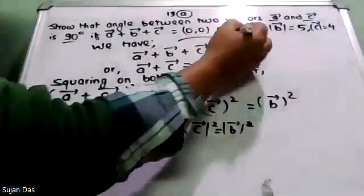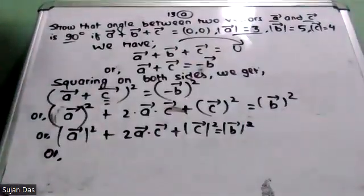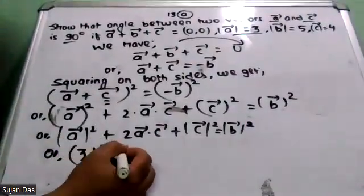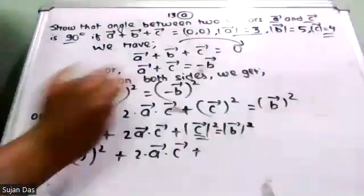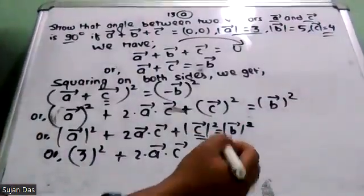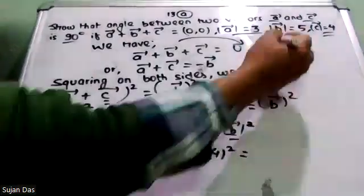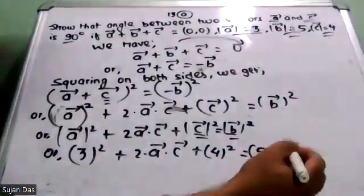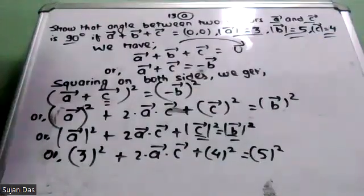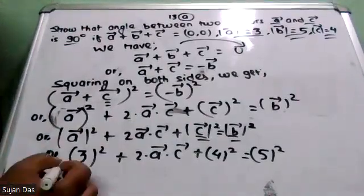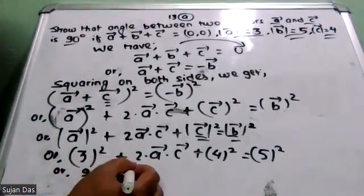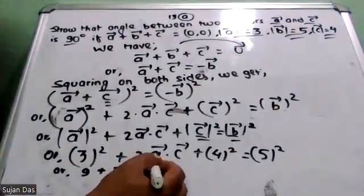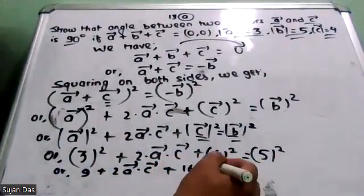Magnitude of vector A is given as 3, magnitude of vector C is given as 4, magnitude of vector B is given as 5. So substituting: 3² + 2(vector A · vector C) + 4² = 5². That is: 9 + 2(vector A · vector C) + 16 = 25.